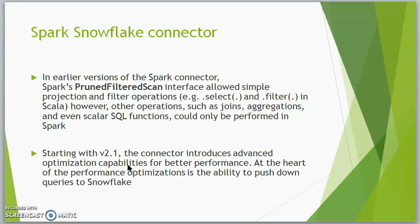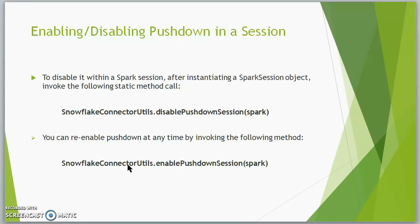Starting from version 2.1 of the connector, they introduced a query pushdown feature which pushes the query from Spark to Snowflake when it decides that Snowflake can do a better job than Spark. Starting from this version, Spark can push large and complex Spark logical plans as a whole or in parts to be processed in Snowflake, thus enabling Snowflake to do more of the work and leverage its performance efficiency.